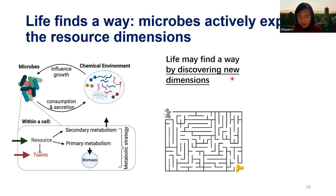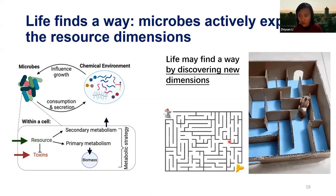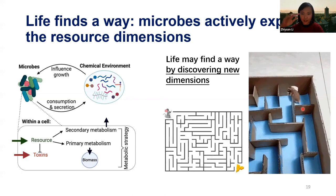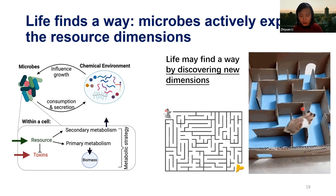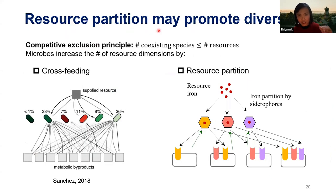Life always finds a way. In theoretical biology, we set constraints and assume the organism optimizes the shortest path. But here, life just finds a new axis. Resource dimension is so important for microbial communities because it determines the upper bound of coexistence. It has been known for about half a century that you can mathematically prove the upper bound of species cannot exceed the number of resource types in the community.